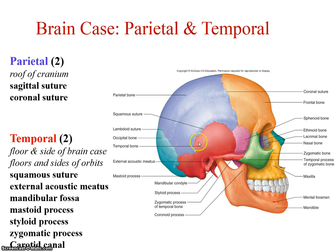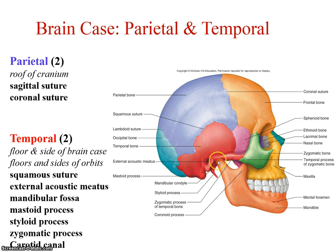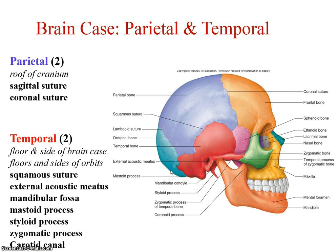The temporal bone has a number of notable features — your ear would sit right here. There's a squamous suture separating it from the parietal, occipital, and sphenoid. There's the external acoustic meatus, a long tunnel, and a mandibular fossa where the mandibular condyle articulates — a small depression. The mastoid process is part of the temporal bone, as is the styloid process just anterior to it — styloid means pen-like. The zygomatic process helps create the cheek, and there's a carotid canal allowing blood vessels through.